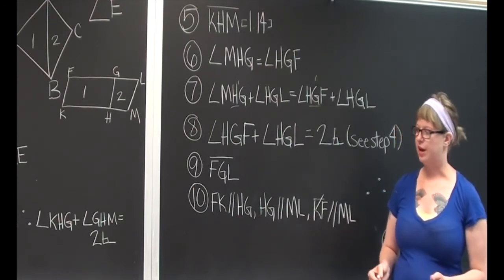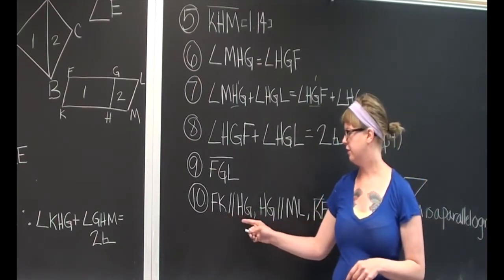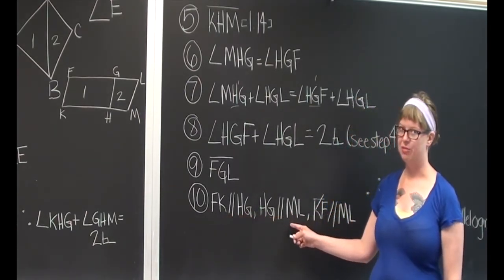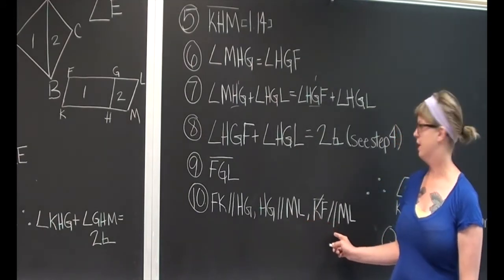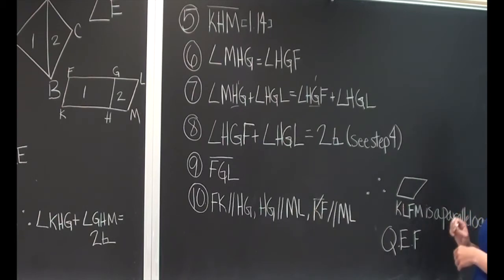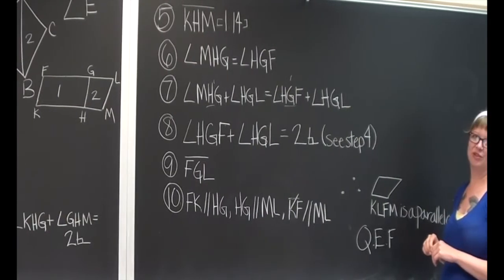And because we made them parallelograms, we know that FK is parallel to HG, and that HG is parallel to ML, and that KF is parallel to ML. And therefore, we've done what we set out to do and created a parallelogram equal to a given figure.